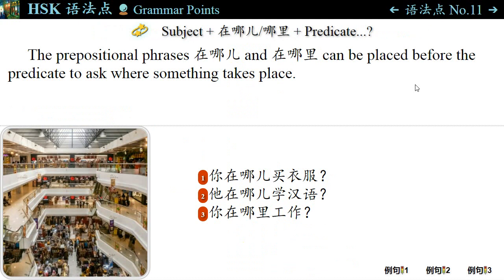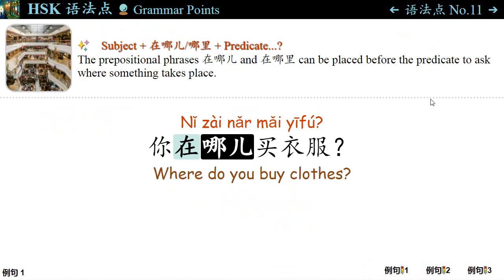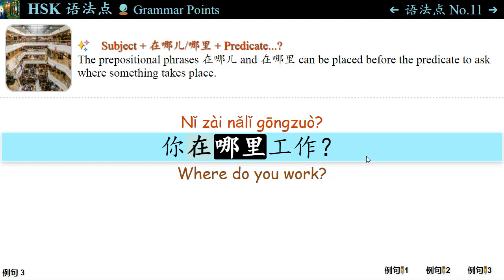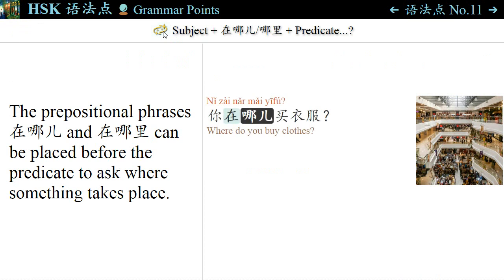语法点十一: The prepositional phrases 在哪儿 and 在哪里 can be placed before the predicate to ask where something takes place. For example: 你在哪儿买衣服? — Where do you buy clothes? 他在哪儿学汉语? — Where does he learn Chinese? 你在哪里工作? — Where do you work? The sentence pattern is: Subject + 在哪儿 or 在哪里 + Predicate.